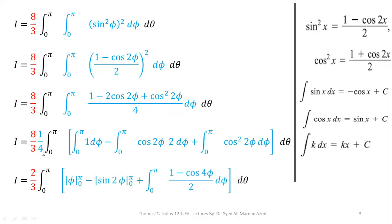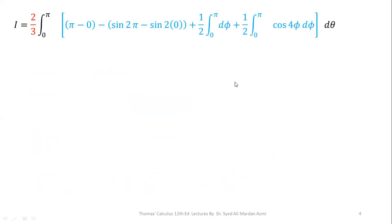The 8 and 4 cancel each other, leaving 2 only, so we have 2 over 3 here. Integration of 1 gives phi for the limit 0 to pi. Integration of cos 2phi times 2 — where 2 is the derivative of the angle — gives sine 2phi for the limit 0 to pi. For cos squared 2phi, we again have no direct formula, so we apply the identity again. After simplification, we get 1 over 2 d phi plus 1 over 2 cos 4phi. Sine 2pi and sine 0 both become 0 after applying limits.